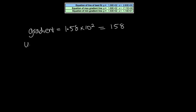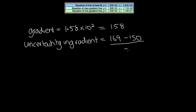To get the uncertainty in gradient, we need to do the steepest gradient, which is the highest gradient, which is this one here. So that is 169 minus the shallowest gradient, which is the 150 divided by 2. So I always do the biggest minus the smallest divided by 2 to get our uncertainty. When we do this for the gradients, we end up with 9.5. And so our gradient is equal to 158, 9.5 will round this up, plus or minus 10.